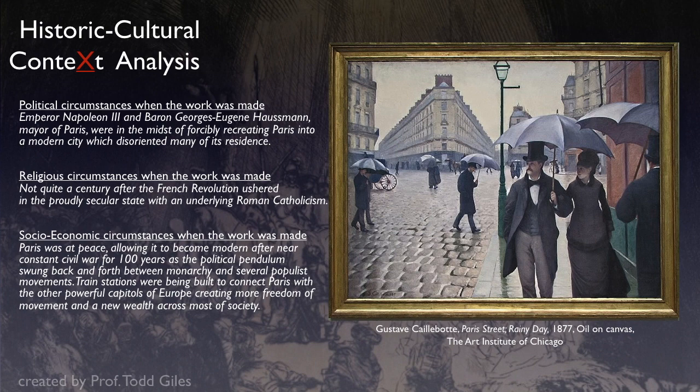So we now know about the political, religious, and socioeconomic circumstances — all the context on the outside of the painting. By looking at these circumstances, let's come in and look at the painting itself. Do we see any of the political circumstances? I think we do with these new apartment buildings, new cobbled streets, and people walking around freely. There's nothing overtly political that we're seeing, but it's sort of on that back end.